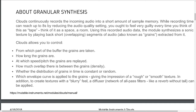Clouds allows you to control from which part of the buffer the grains are taken, how long the grains are, at which speed or pitch the grains are replayed, how much overlap there is between the grains (density), whether the distribution of grains in time is constant or random, and which envelope curve is applied to the grains, giving the impression of a rough or smooth texture. In addition, to create textures with a blurry feel, a diffuser — a network of all-pass filters, like a reverb without a tail — can be applied.